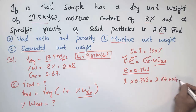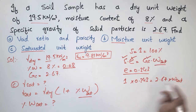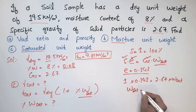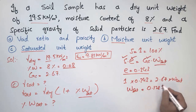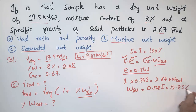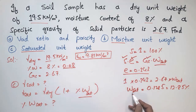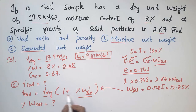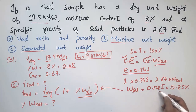Substituting into the equation: 1 × 0.343 = 2.67 × w_sat. Solving this equation, the saturated water content w_sat comes out to be 0.1285, or 12.85%. This is the water content when there is full saturation in this soil sample. Remember to always use the decimal value in calculations, not the percentage.